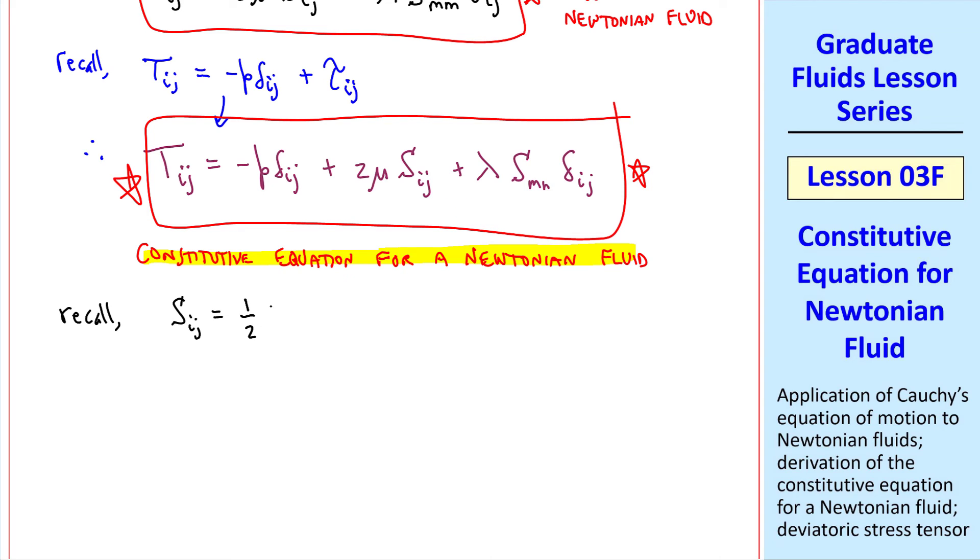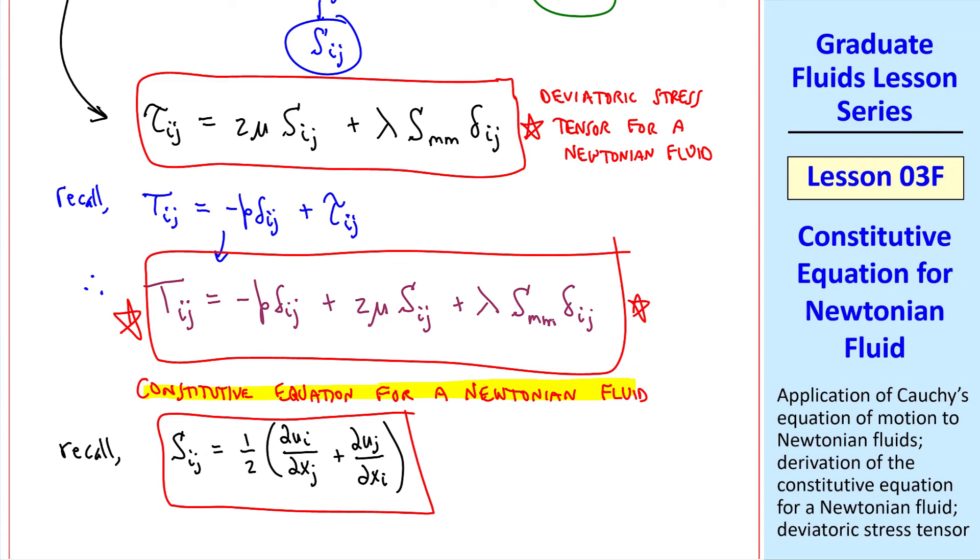Now let's not forget our goal. We wanted to write tij in terms of the primary variables. Here's pressure, but we need to substitute the equation for sij in order to complete this task. Well, again, sij, strain rate tensor, is 1 half del ui del xj plus del uj del xi. And I just realized this should be an m rather than an n. And smm is summed over these indices, making these two terms the same and the half goes away. So smm is del u m del xm, or the divergence of velocity.